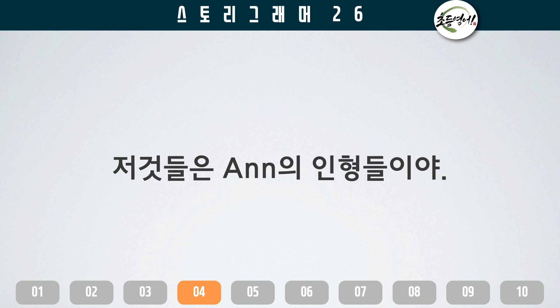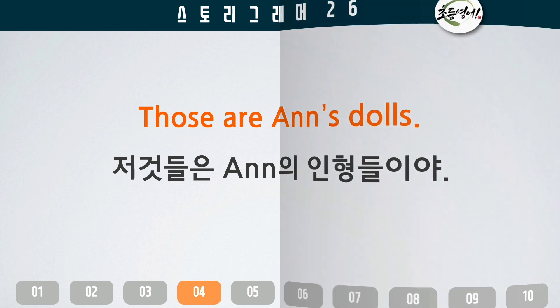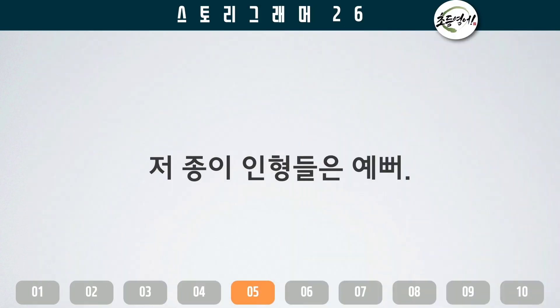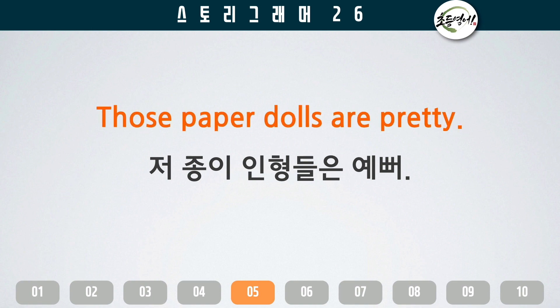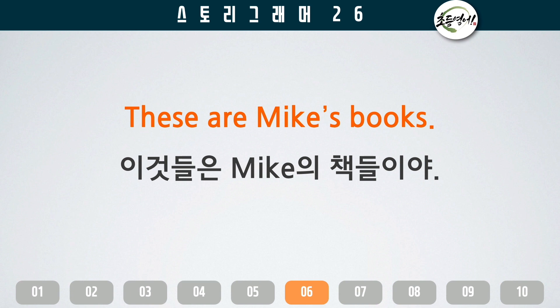저것들은 Ann's dolls. Those are Ann's dolls. 저 종이 인형들은 예뻐. Those paper dolls are pretty. 이것들은 Mike의 책들이야. These are Mike's books.